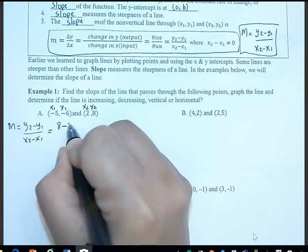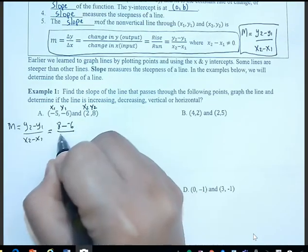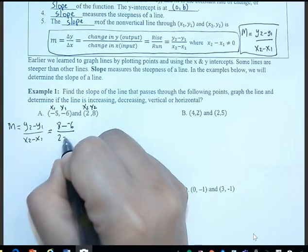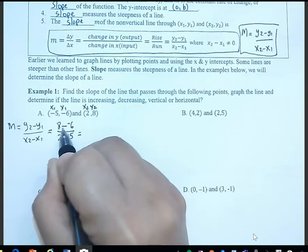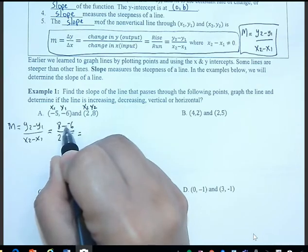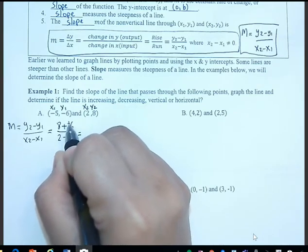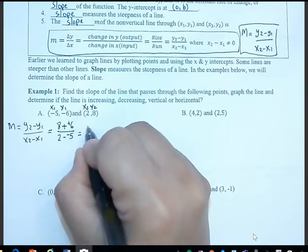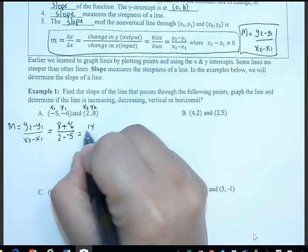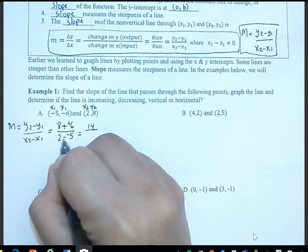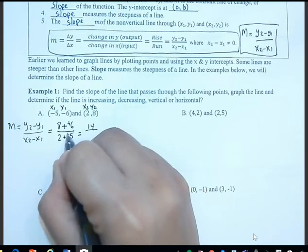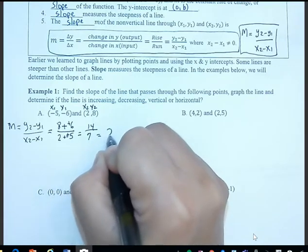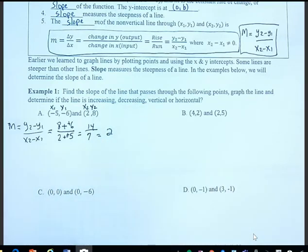Minus y₁ which is negative 6, divided by x₂ which is 2, minus x₁ which is negative 5. Negative minus negative becomes positive, so 8 plus 6 is 14, and 2 minus negative 5 is 7. So we get 14 over 7, which equals 2. Our slope here is 2.